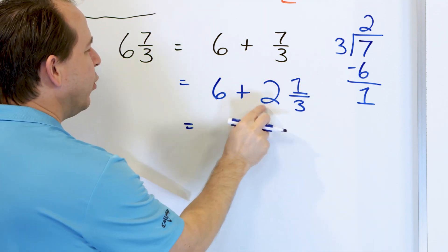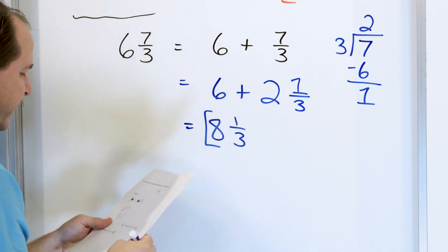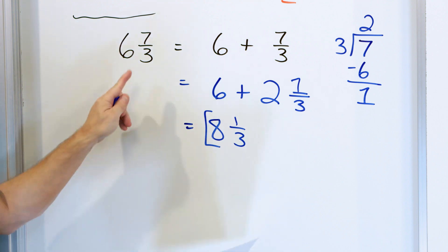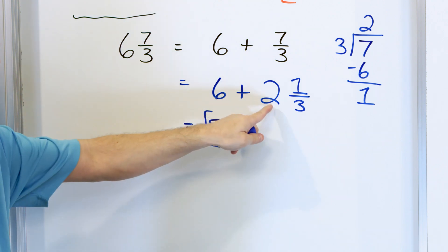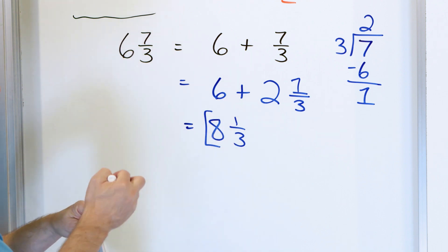Next, we add the whole number. 6 plus 2 is 8 and 1/3rd. So the answer is 8 and 1/3rd. Basically this 7/3rds contributes two more whole numbers to what we had, and then there's a little fraction still left over.